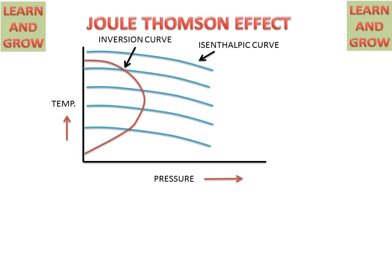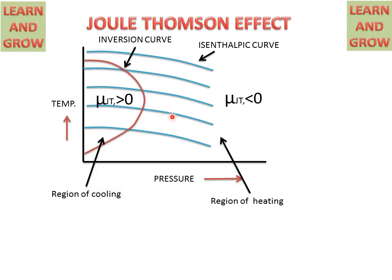This is the inversion curve. On the left-hand side of the inversion curve, there is a region of cooling — the gas will be cooled in that region. On the right-hand side, there is a region of heating — the gas will be heated. On the right-hand side, the Joule-Thomson coefficient is negative, or less than zero, and on the inversion curve itself, it equals zero.